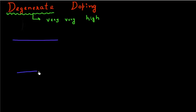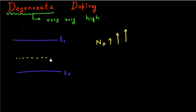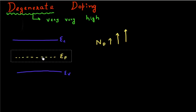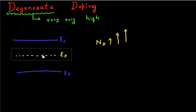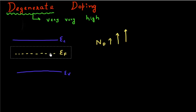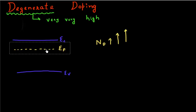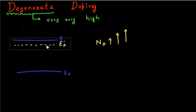Let's say I have this as the band gap of my semiconductor, and I add donor atoms to it, and I keep on increasing the number of donor atoms. Let me draw the Fermi level. If the semiconductor is intrinsic, the Fermi level will lie somewhere close to the center. As you keep on increasing the number of dopings — the number of donors — this Fermi level will progressively move close to your conduction band. If I increase even more, it will move even closer.